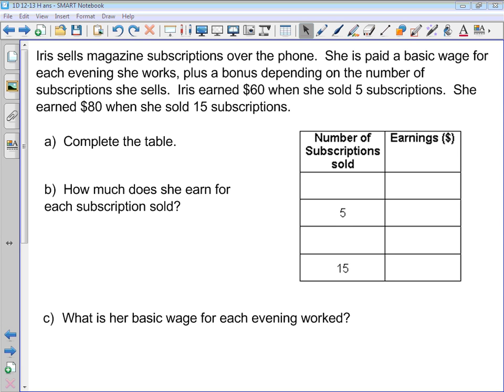Okay, our third example here in box H, this is unit 1213 still. Let's read the question. Iris sells magazine subscriptions over the phone. She is paid a basic wage for each evening she works plus a bonus depending on the number of subscriptions she sells. Iris earned $60 when she sold 5 subscriptions. She earned $80 when she sold 15 subscriptions. So they're giving us some information here in words and the first thing they're asking us to do is complete the table.